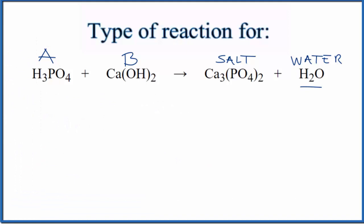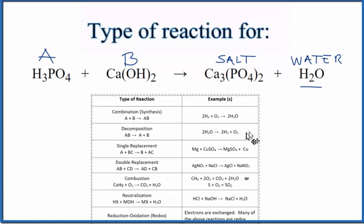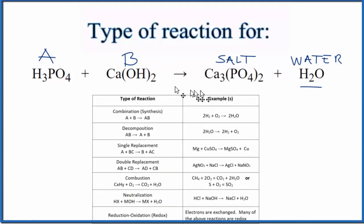Let's take a look at a table of common types of chemical reactions here, and we said this is a neutralization reaction because it follows the pattern acid plus base gives us salt and water. So neutralization.